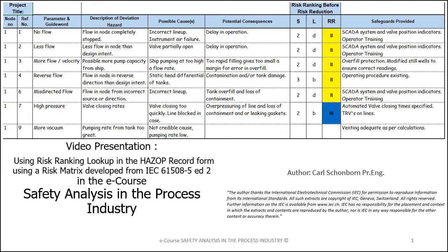The HAZOP record form, a copy of which is shown on this slide, is the most important tool to document the findings of the team during the PHA or Process Hazard Analysis. As we are only considering one node in this example, we will only be completing the one spreadsheet and it will be automatically listed as node 1 in column 1. Similarly, column 2 will automatically list the reference number of the parameter and guide word we entered in the possible deviation checklist.